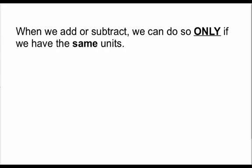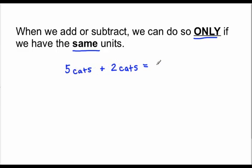One principle that is very important to remember in math is that when we add or subtract, we can only do so if we have the same units. For example, if I have five cats and I want to add them to two cats, I can do that because they're both talking about cats. So I have five cats plus two more cats — that's seven cats. Notice that the unit never changes, but it allows me to put these two quantities together.